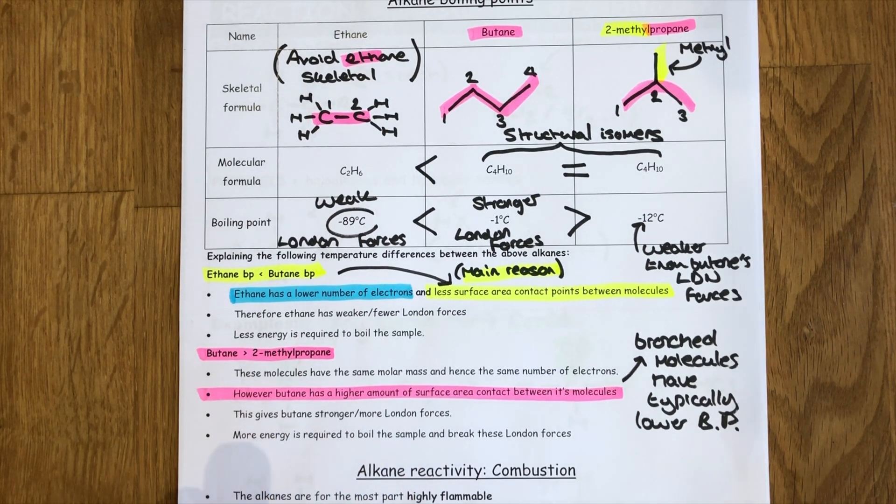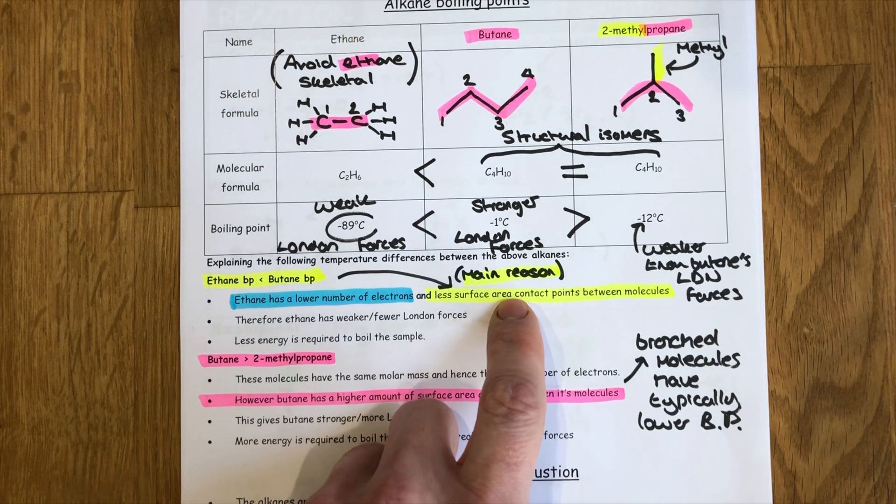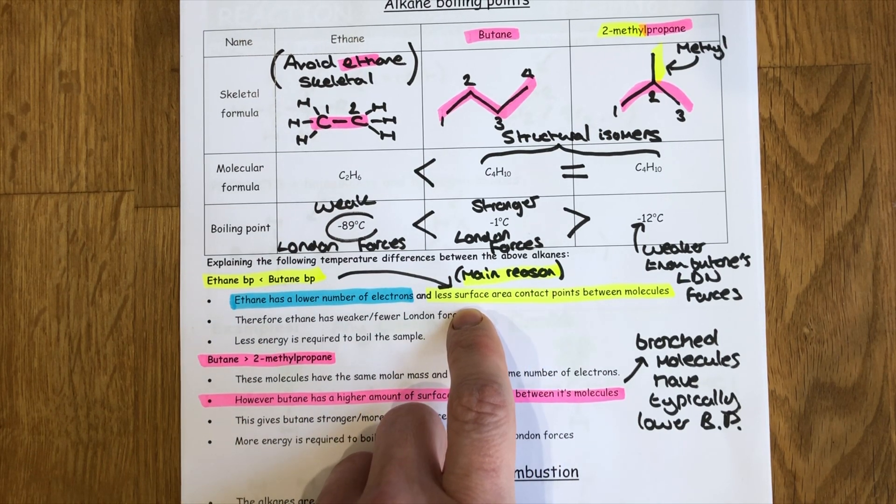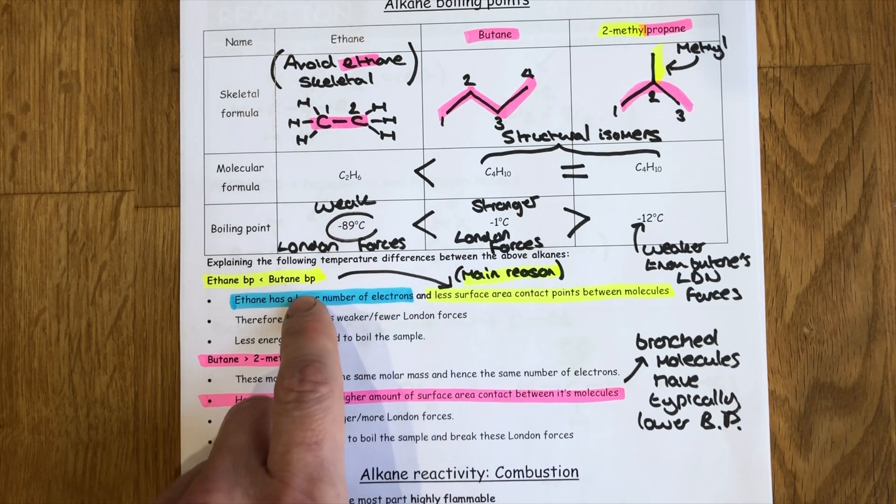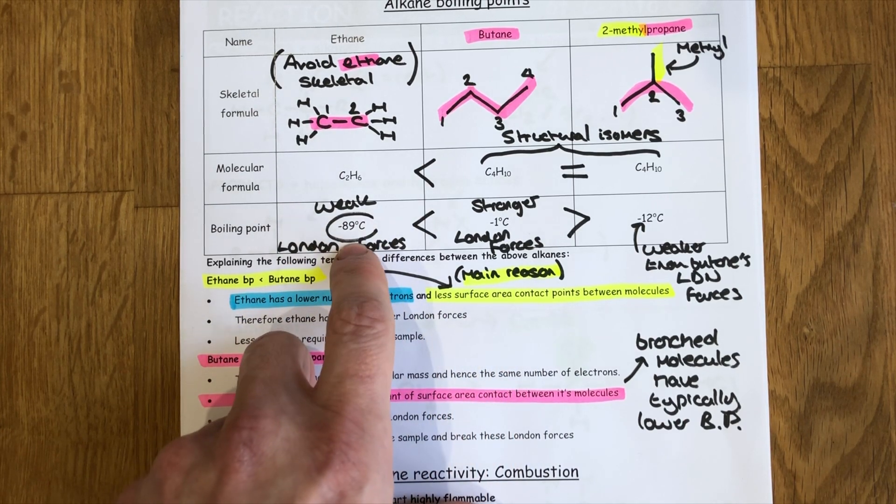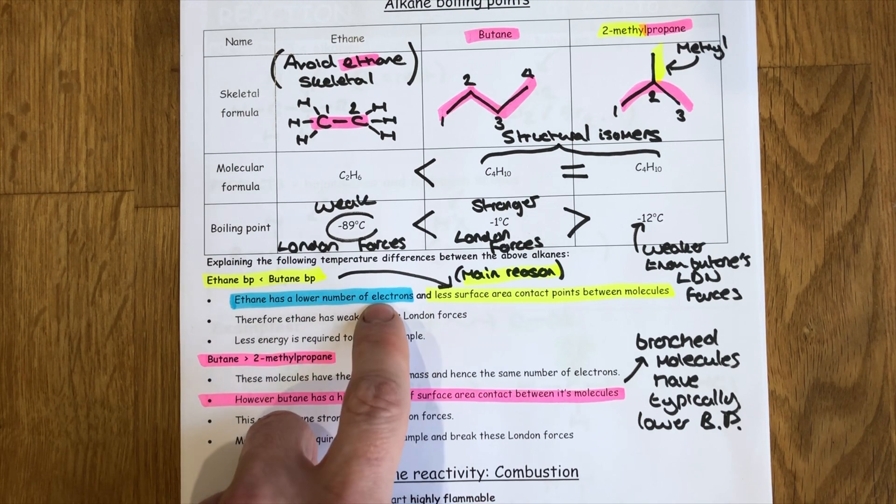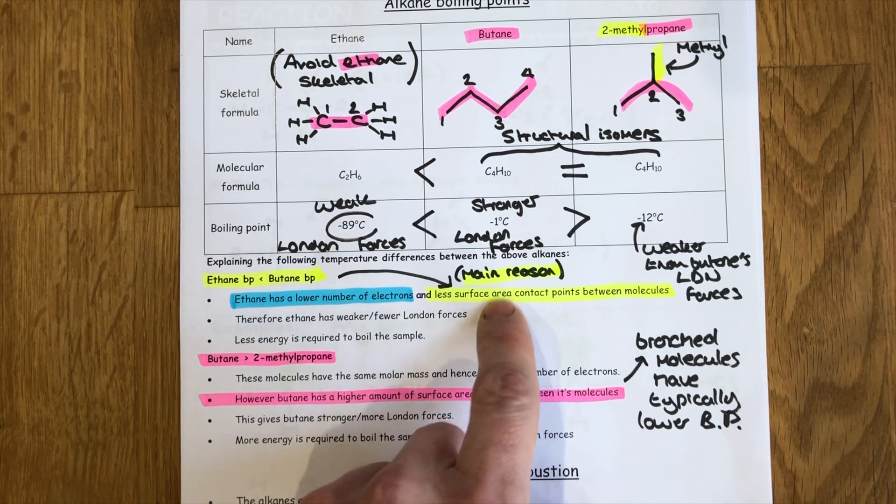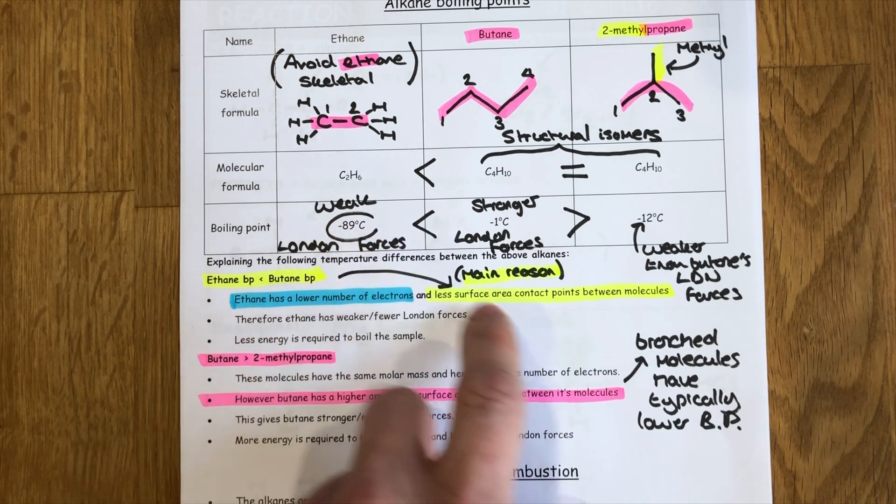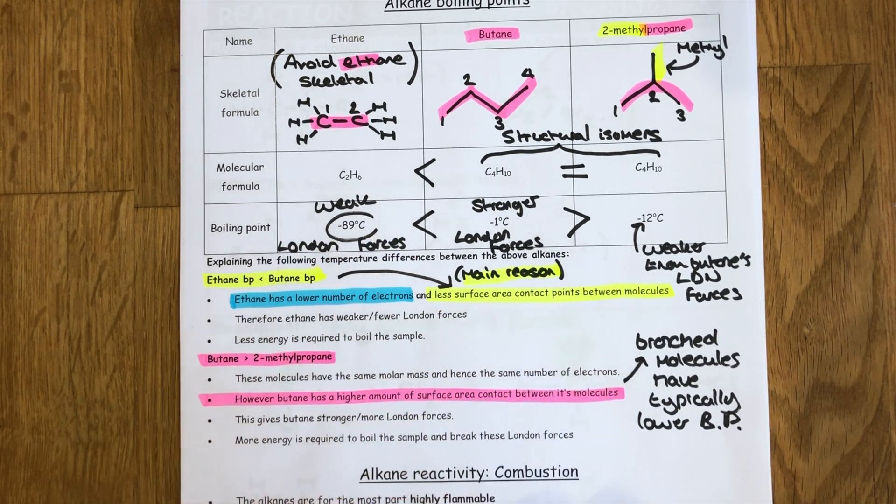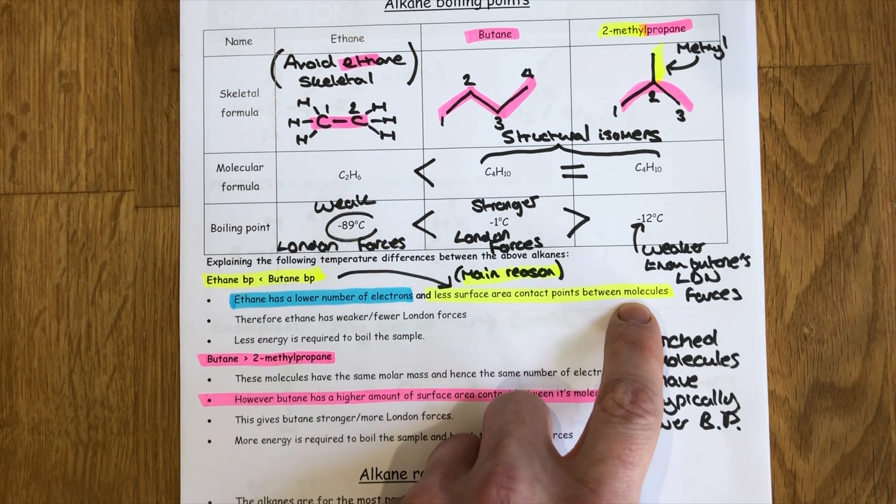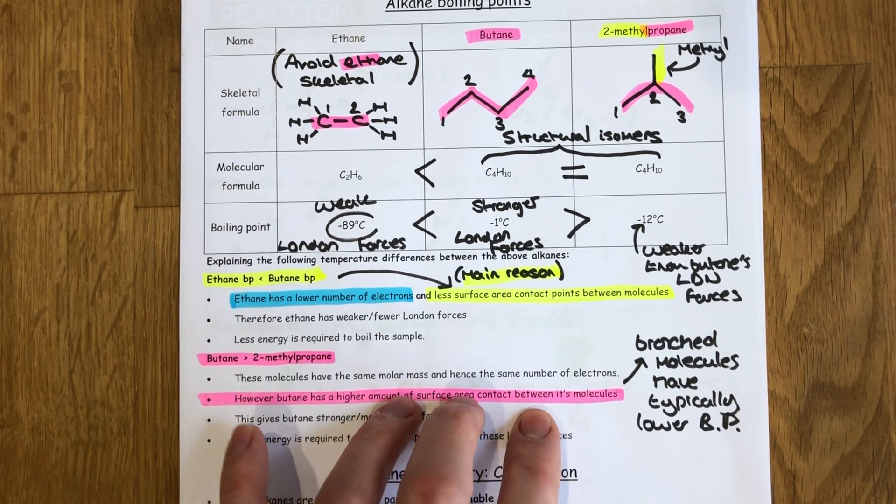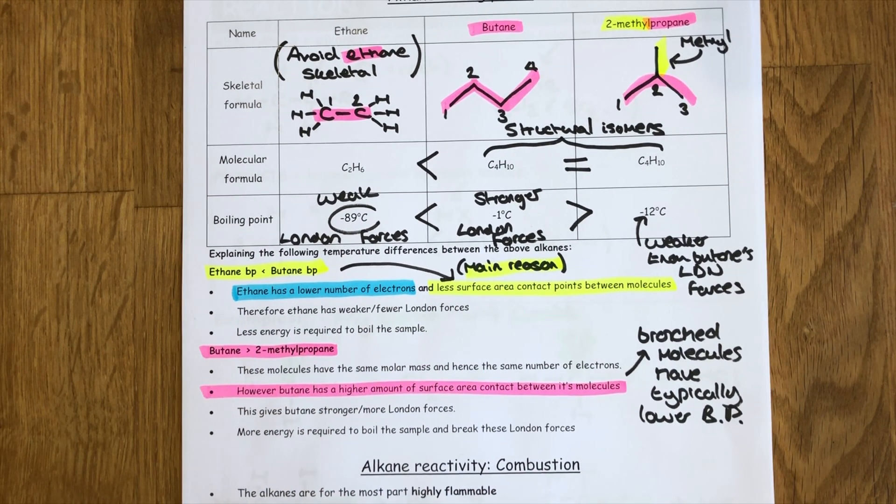The difference in the boiling points as we've already mentioned is because of the London force difference. Ethane has this very low boiling point because it's got fewer electrons and our main reason is because it's quite a short chain we've got less surface area contact points between molecules.